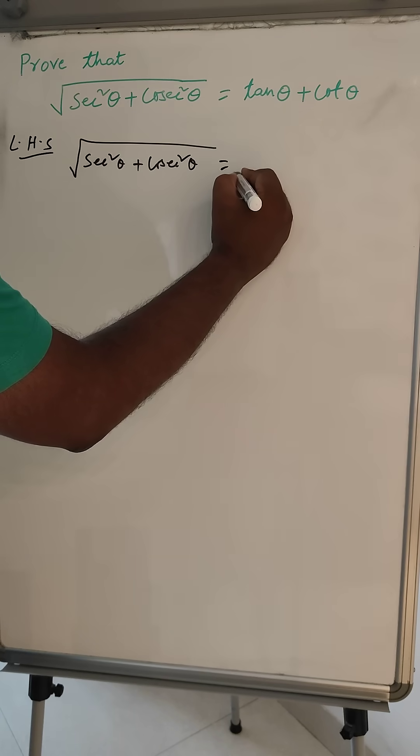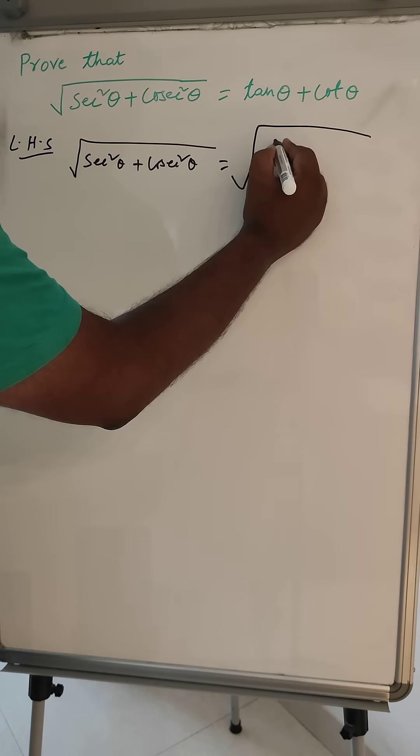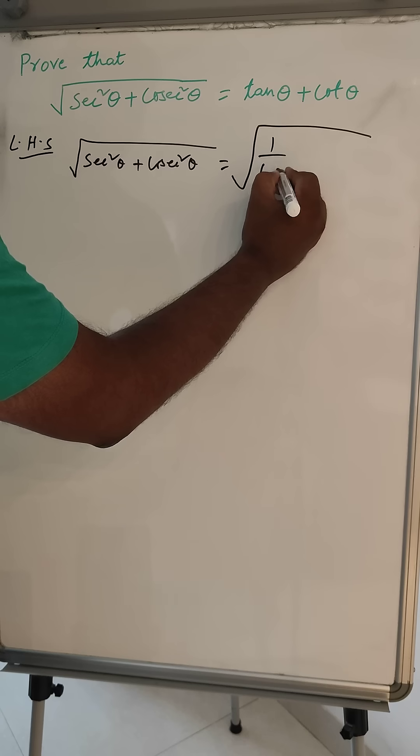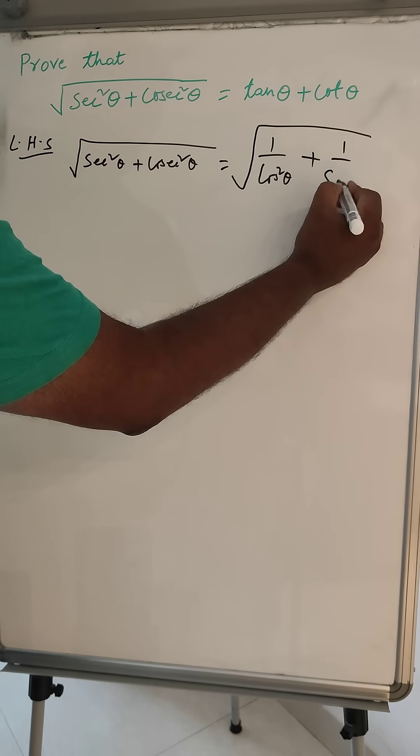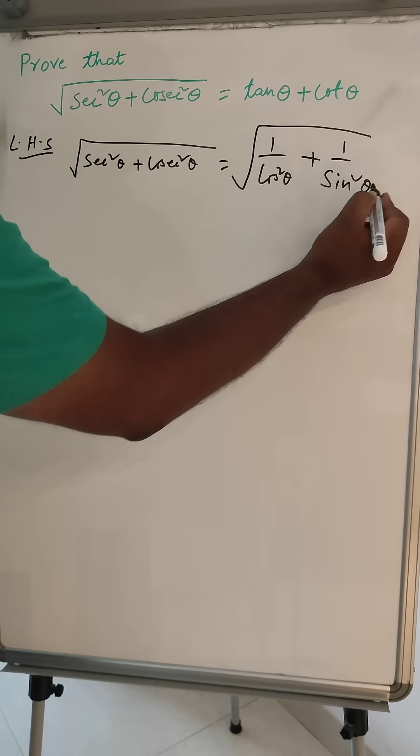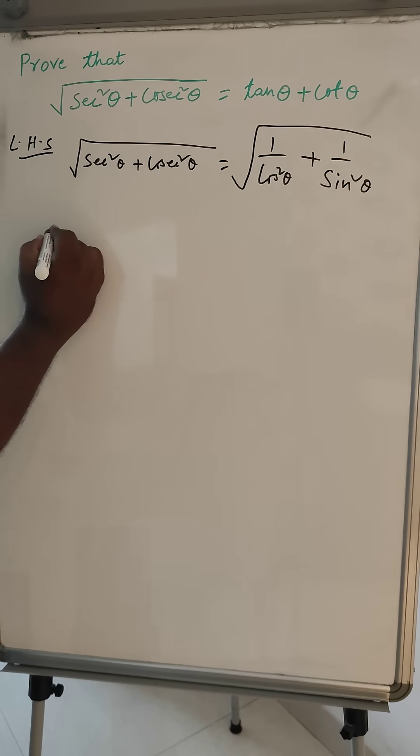We can write this like one by cos square theta plus one by sin square theta. Then this step,